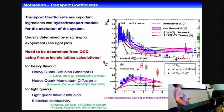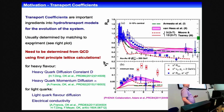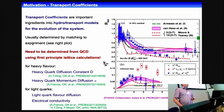For the heavy flavor case, people use some numbers for the heavy quark diffusion coefficient, plug it into their models, and then try to describe, for instance, the heavy flavor R_AA or the heavy flavor v_2. But of course, it would be very important to understand and calculate these transport coefficients directly from QCD, from first principle QCD calculations.